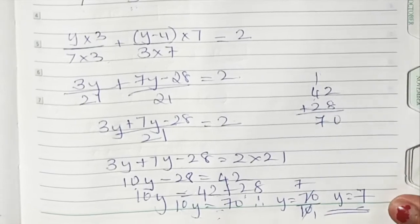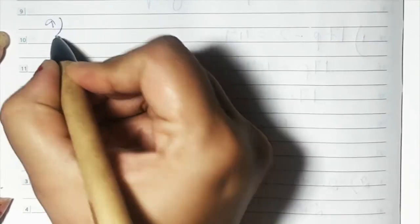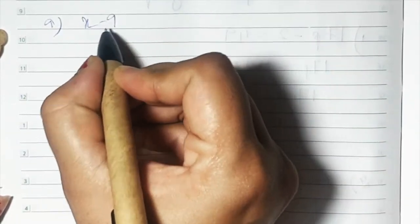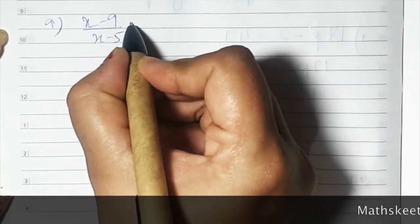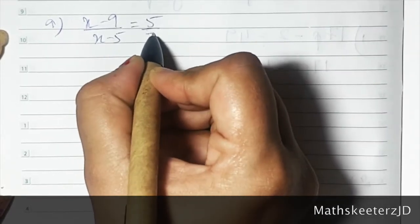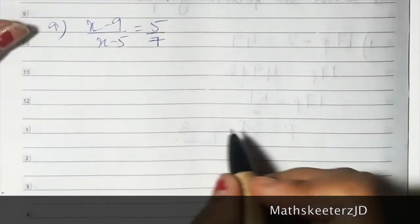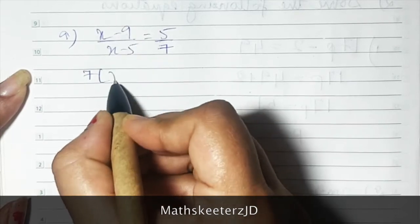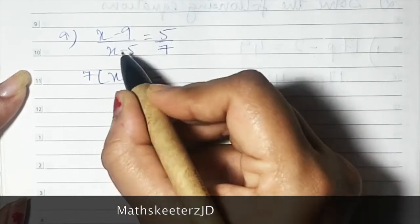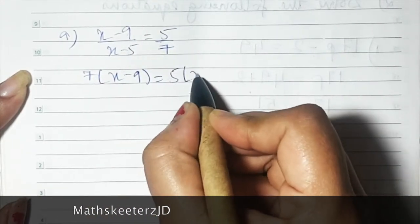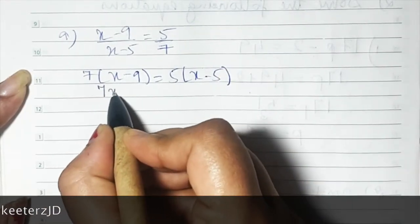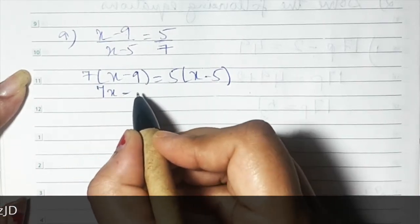Sum number 9: x minus 9 upon x minus 5 is equal to 5 upon 7. We cross multiply: 7 into x minus 9 and 5 into x minus 5. So 7 into x is 7x, and 9 sevens are 63.